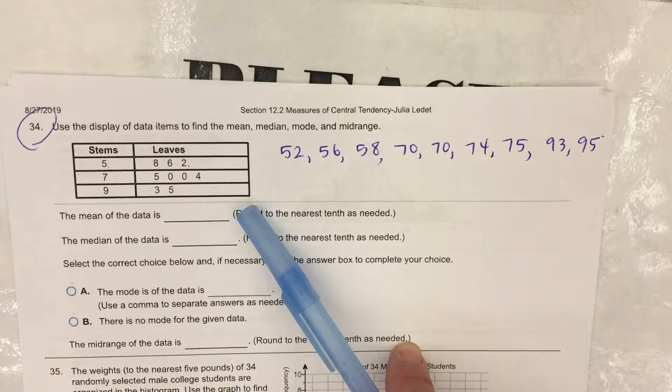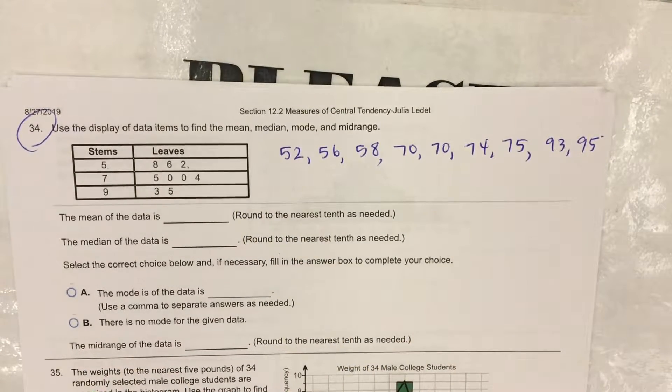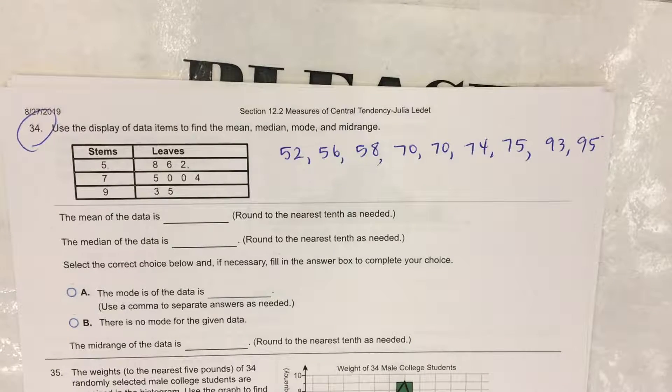There's some gaps. They went from the 50s to the 70s to the 90s. So there were no scores in the 60s. There were no scores in the 80s. If it was pencil and paper, I would want you to show that gap.